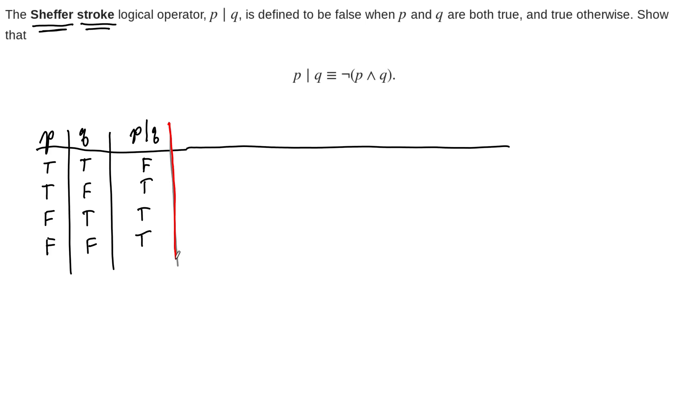So at this point, we've made the truth table to basically just define the Sheffer stroke of P and Q. So P stroke Q. And now what we need to do is build this second proposition here. So let's do it from basic principles. We'll do P and Q. Remember that P and Q is true only when they're both true, and it's false otherwise.